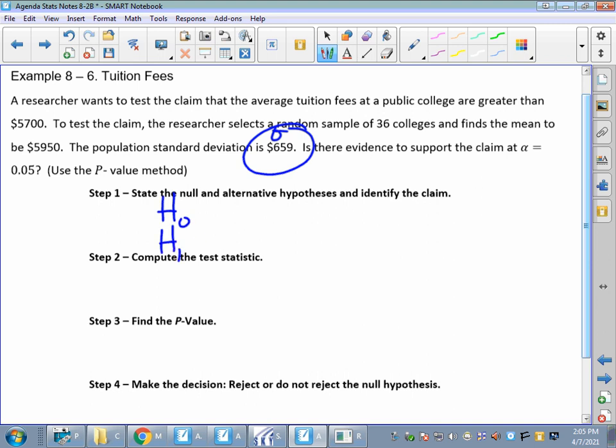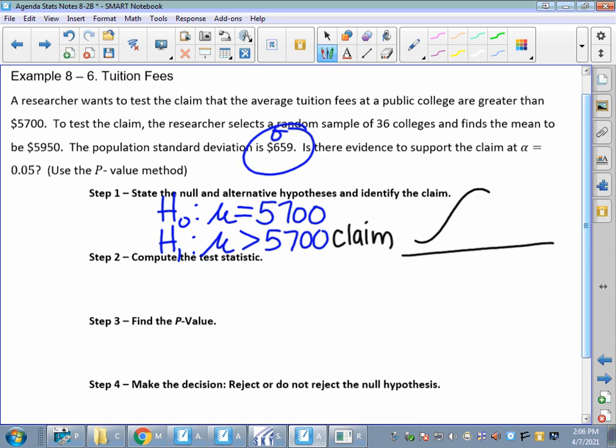Let's state our hypothesis. H sub O, H sub 1. H sub O, right, is always an inequality. So, mu is equal to, well, he wants to test to see if they're greater than 5,700. So, mu equals 5,700, and he's claiming that they are greater than 5,700. So, our claim is this. They want to test the claim that fees are greater than. If I'm thinking about this in terms of a curve, here's my mu in the center. My alpha, it's greater than, so it's right-tailed. My alpha is 0.05.